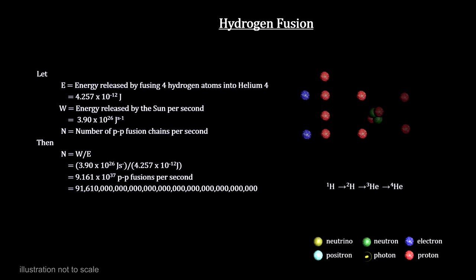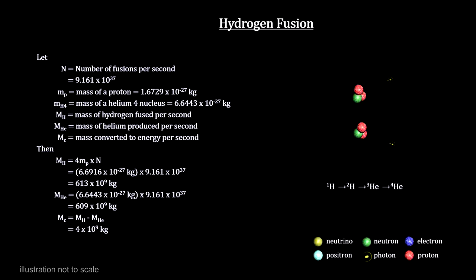But by measurement, we know that the sun produces 3.9 times 10 to the 26 watts. To produce this amount of energy, it would take a tremendous number of these fusion events every second. We calculate that 613 million metric tons of hydrogen fuse to form 609 million metric tons of helium, converting 4 million metric tons of matter into energy every second.